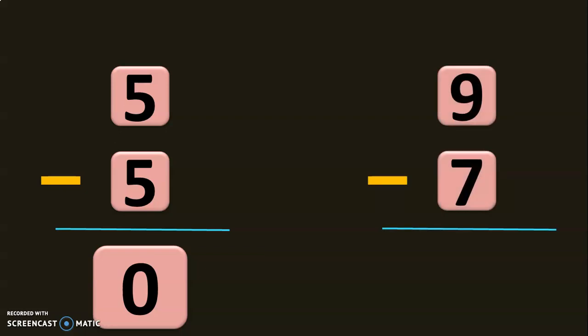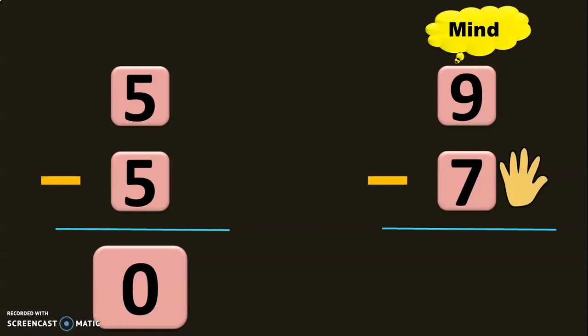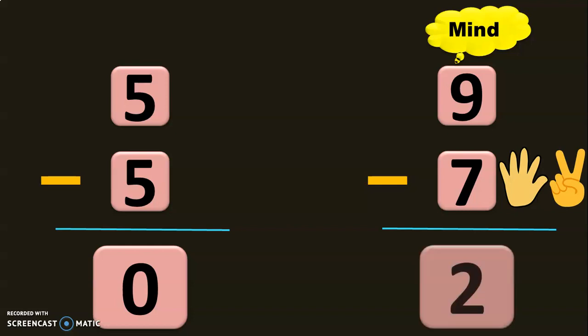9 minus 7: 9 in the mind, 7 in the fingers — 5 fingers in one hand, 2 fingers in the other hand. Before 9: 8, 7, 6, 5, 4, 3, 2. So the answer is 2.